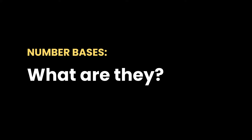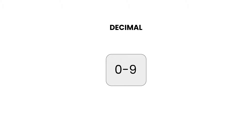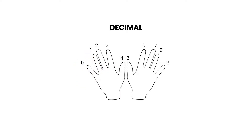Hey guys, today we're going to be covering number bases and looking at some examples to show how we can convert between them. As humans, we're used to representing numbers in a certain way, but there are actually loads of different ways that we can do it. We tend to use base 10 to count numbers, using 0 to 9 to represent the digits, and all the numbers in the number system are made up of combinations of these digits. This might be because we have 10 fingers, one for each digit, giving us a tool that we can naturally use to count.